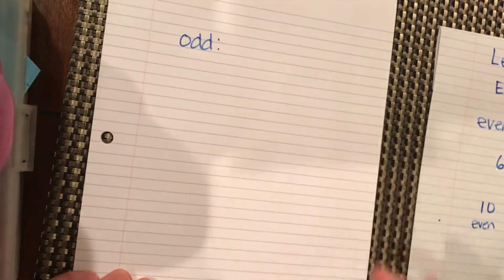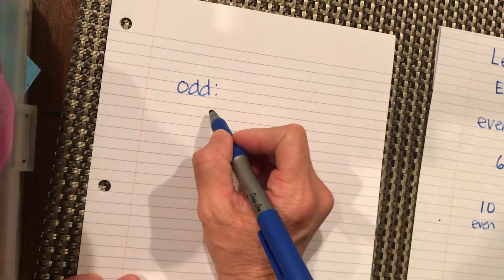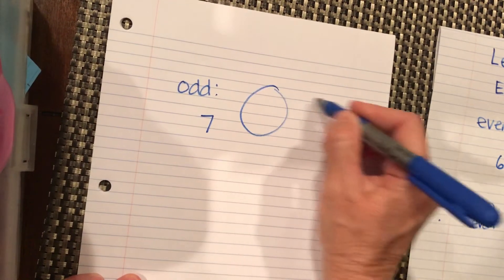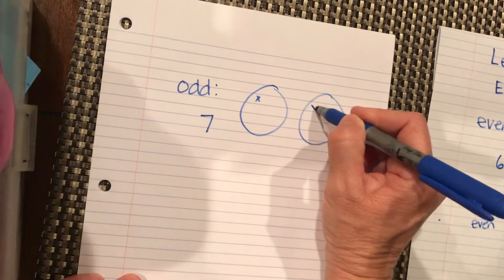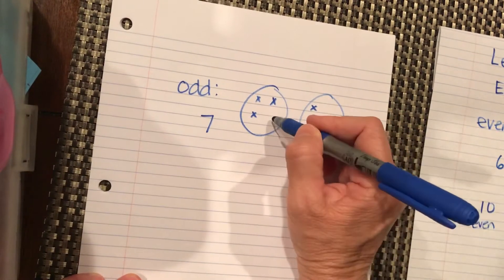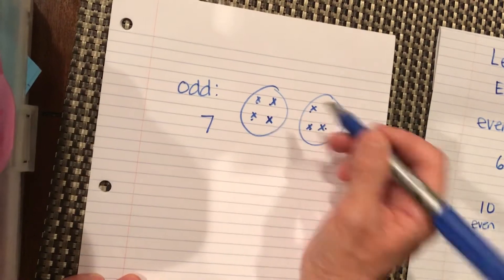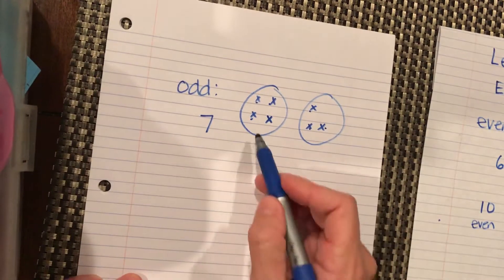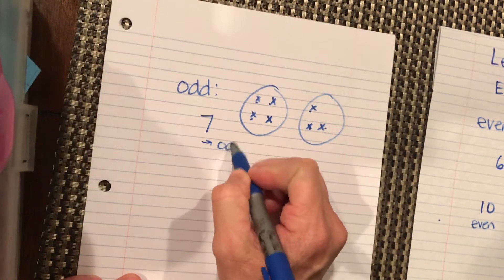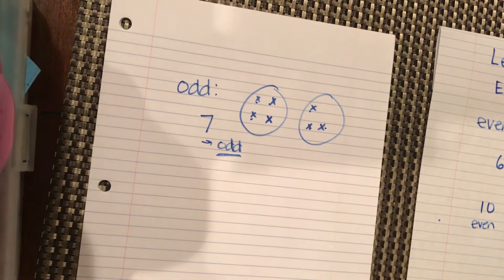Odd means I can't split it evenly between two groups. So let's say I have 7 — 1, 2, 3, 4, 5, 6, 7. This one had 4, that one has 3. It's kind of odd when one person has more than another, so that's what we call an odd number.